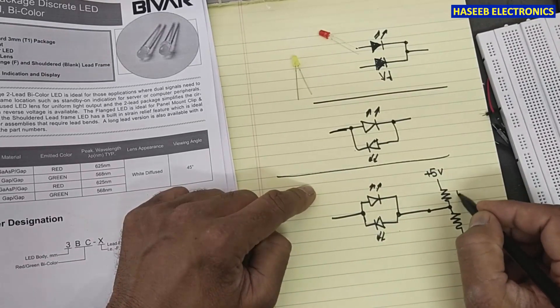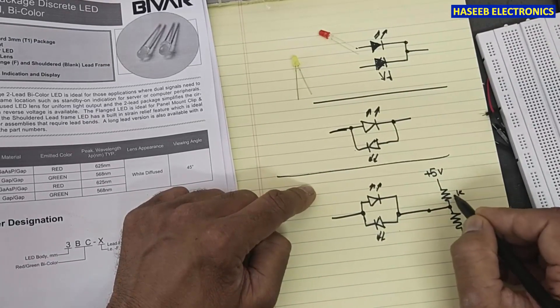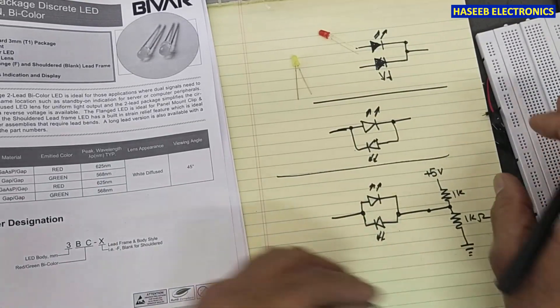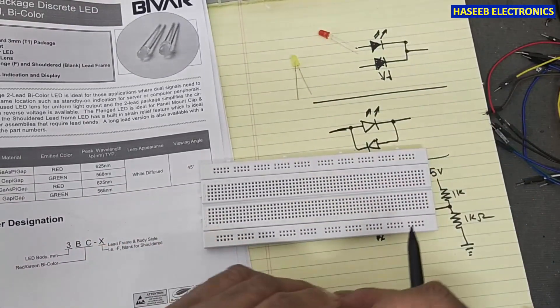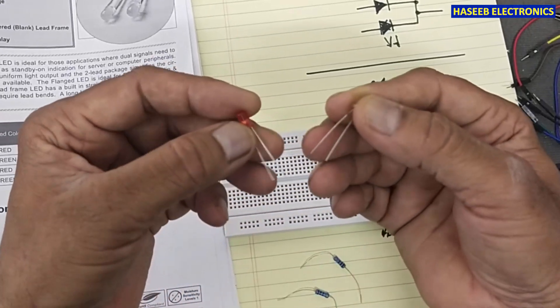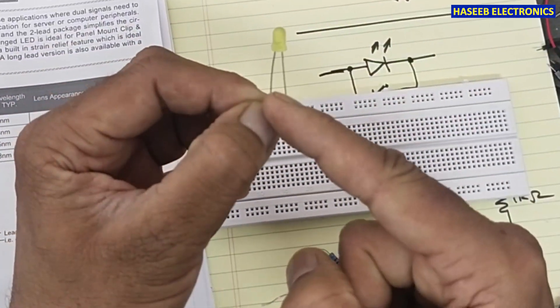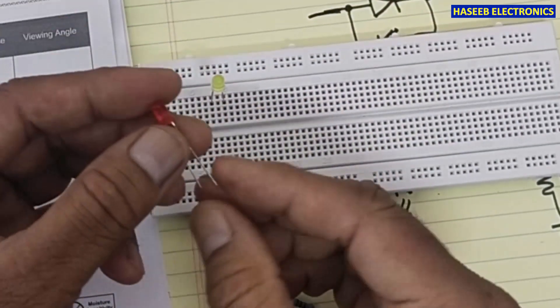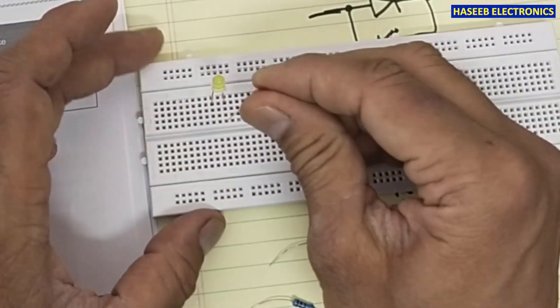One will be forward, second will be reverse biased. I will use one-kilo-ohm resistor and let's make the circuit. I will use two different LEDs. Now I will connect one anode to the left side, the second LED anode to the right side.